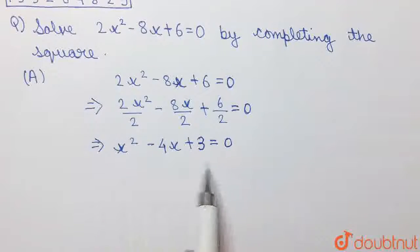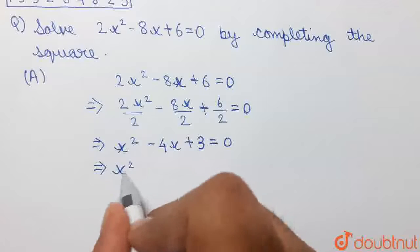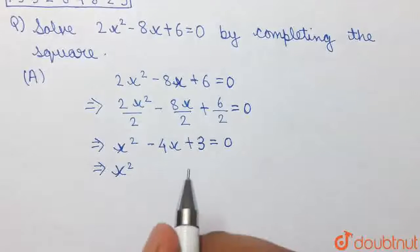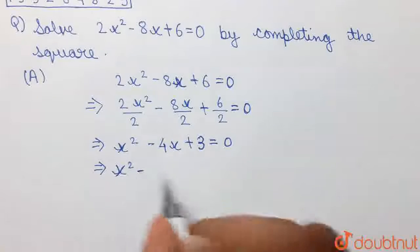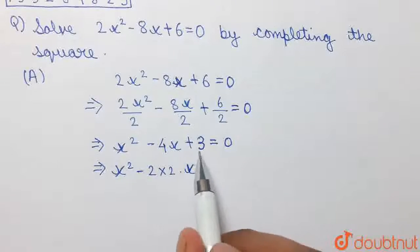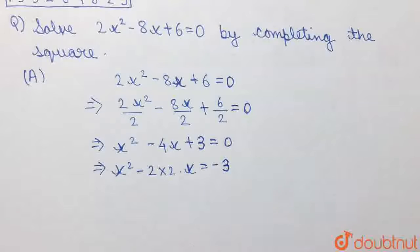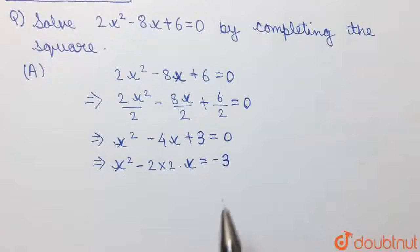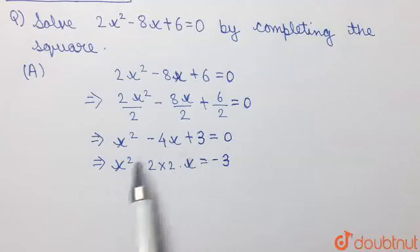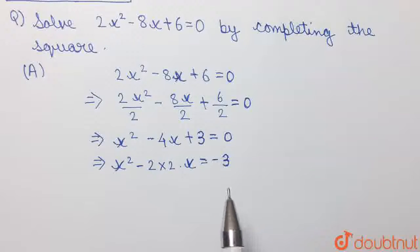Now we have to complete the square in this equation. We observe that minus 4 can be written as minus of 2 into 2. We write minus 4x as minus of 2 into 2 into x, and we transport the plus 3 to the right hand side of the equation so that it becomes minus 3. Now we observe that if plus 2 squared is added to the left hand side, the entire term will be equal to x minus 2, whole squared.